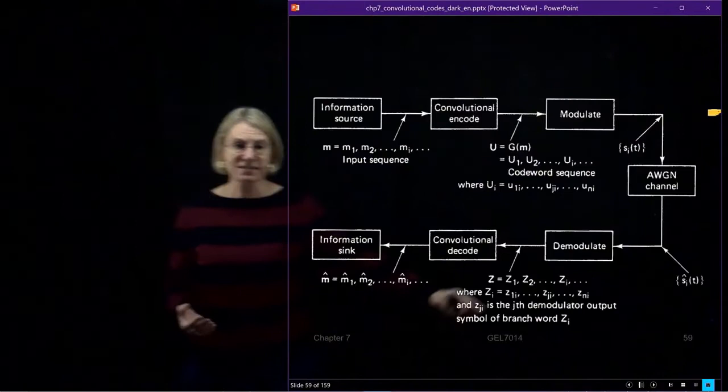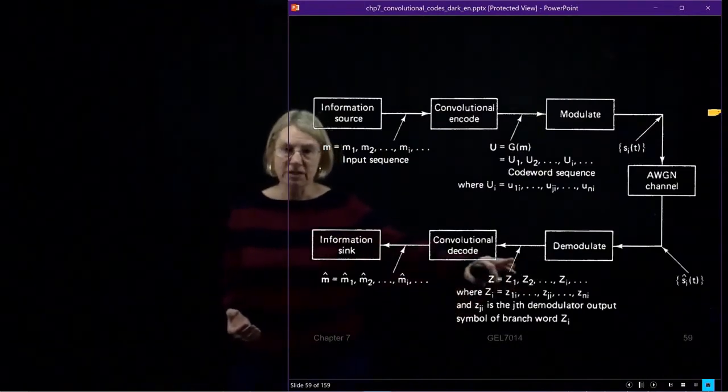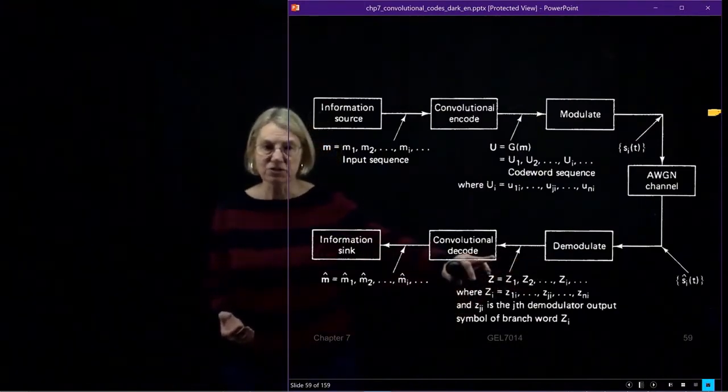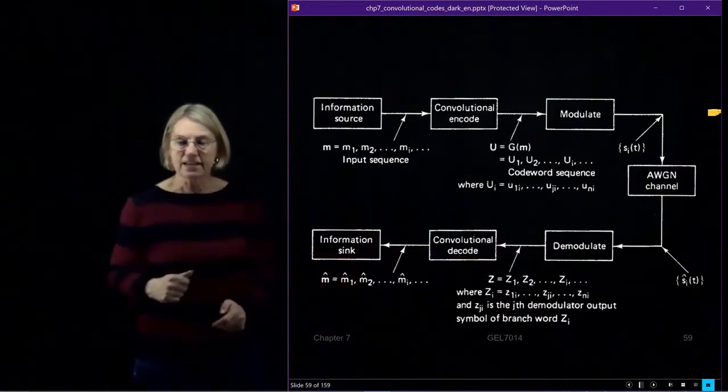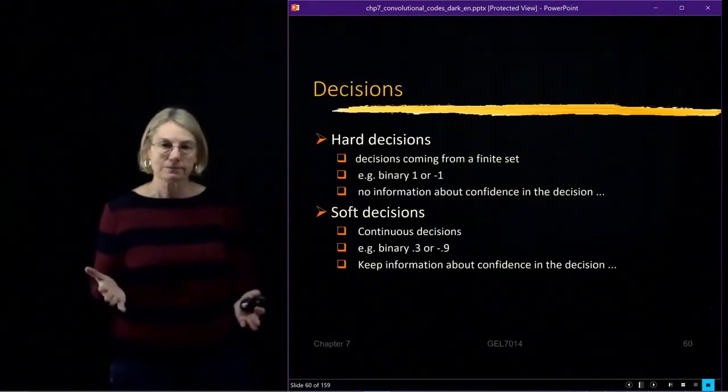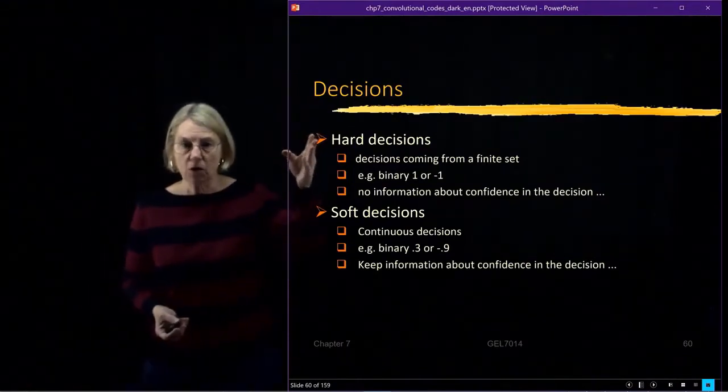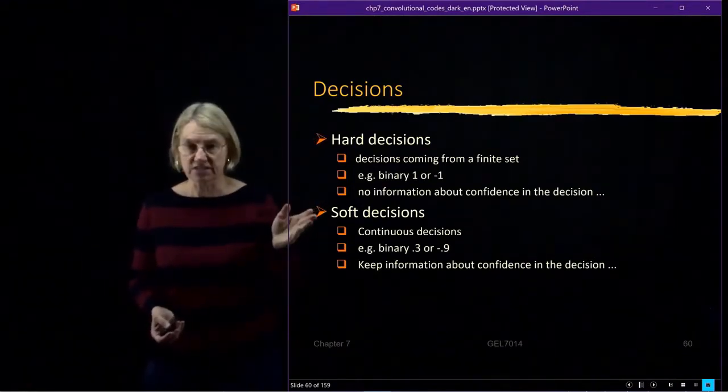The first part is here where I do the demodulation and I feed information to the convolutional decoder. The first part to discuss is at that length there because we have two choices. We could do what is called hard decisions, or we can transfer what are called soft decisions.